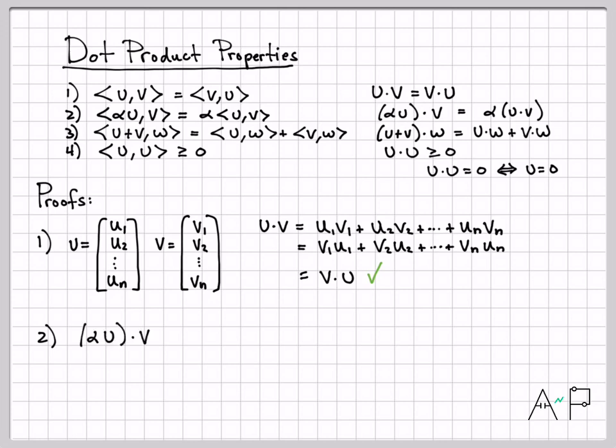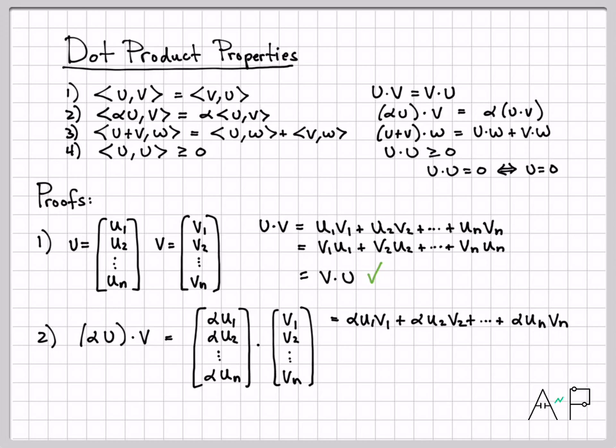Property two: I need to compute what alpha u dotted with v is. Alpha u just means multiply every coordinate of u by alpha, and then dot it with v. Now if I use my definition of the dot product, it just means multiply each coordinate and then add them all up. That's alpha u1v1 plus alpha u2v2 plus all the way down to alpha un vn. And now what can I do? There's an alpha on every single term here that I'm adding up, so I can factor out that alpha. And now look what I have inside right here. That is u dot v. So that's equal to alpha times the quantity u dot v. So you've directly shown that this is equal to this, which establishes property two.